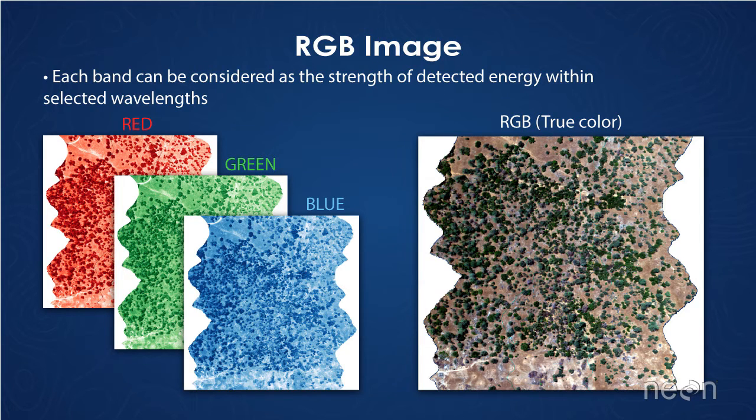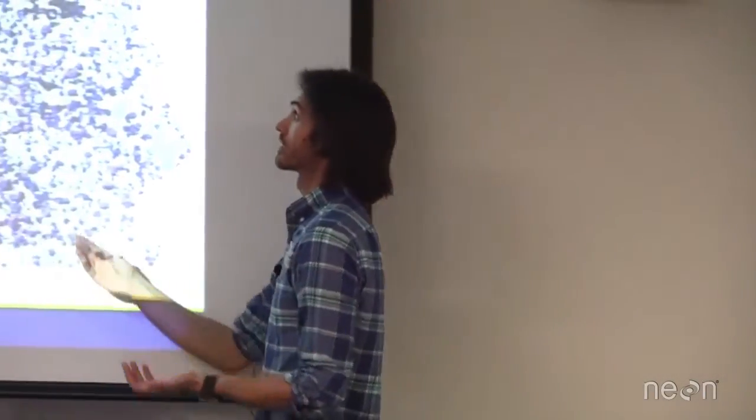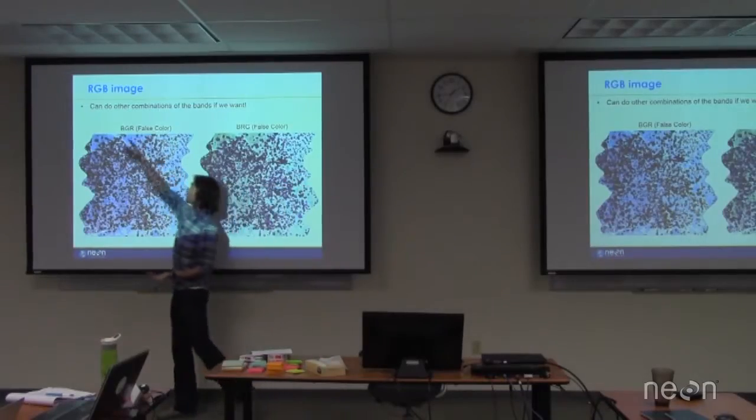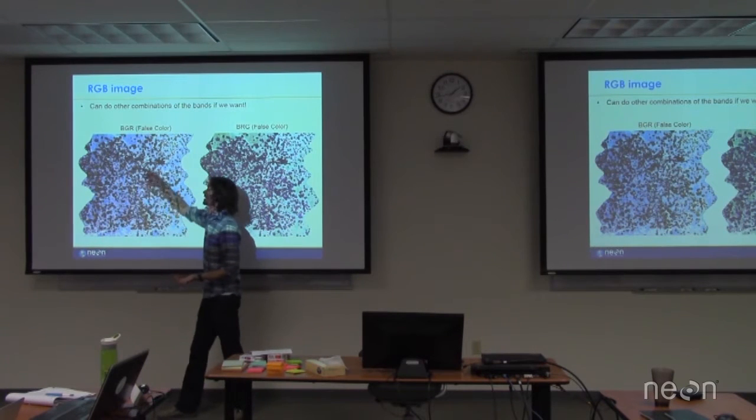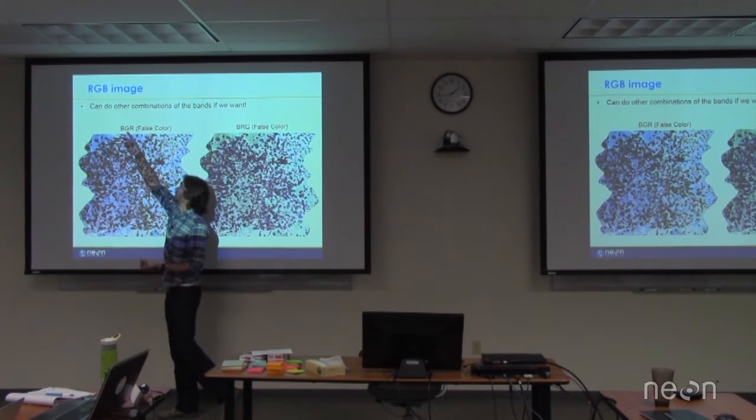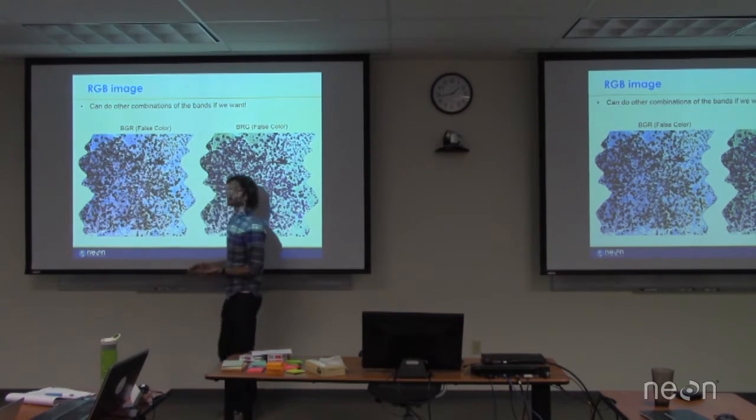So what's important to realize is that we don't have to do that. Instead of making an RGB image, I could take the information I got from the blue band, color that red here, information from the green band, color that green, and information I got from the red band and color that blue.